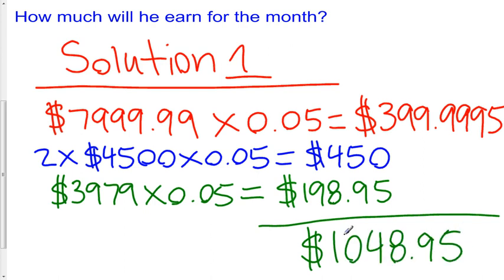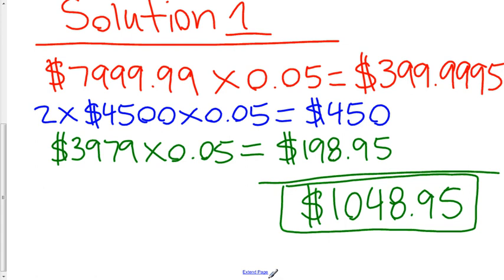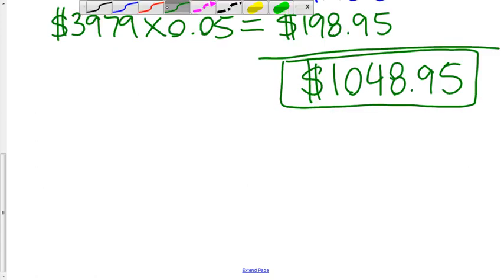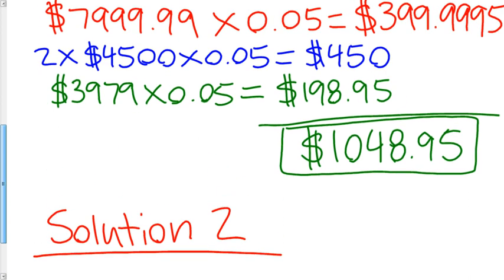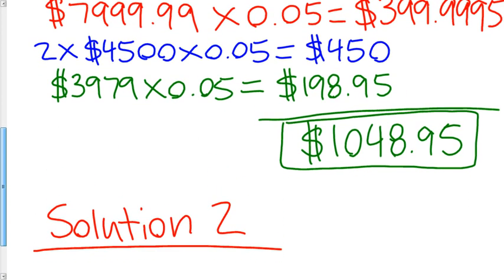So William earned $1,048.95 that month based on his sales. Now, as an alternate solution here, we'll call this solution two. What we could have done is we could have simply added up all of William's sales and then calculated the commission on the total sales.